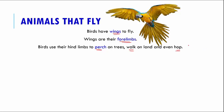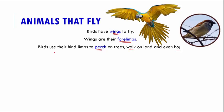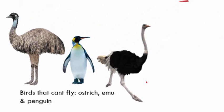Apart from flying birds, there are also certain birds which cannot fly — the ostrich, the emu, and the penguin. These three birds are very large and heavy, and because of their body weight they cannot fly. They also have very poorly developed wings, which is why they are flightless.